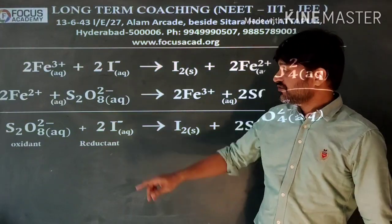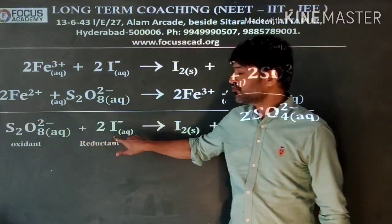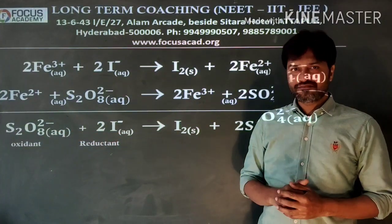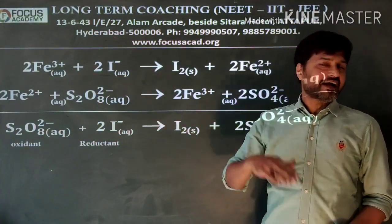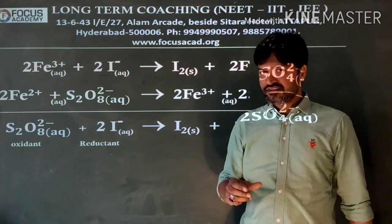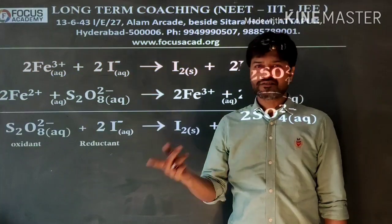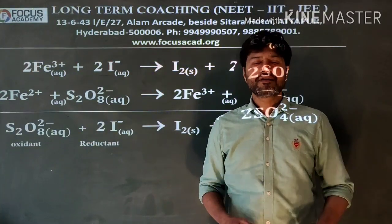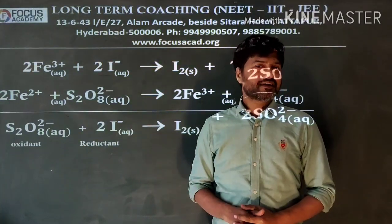If you don't use catalyst, these two having same charge tend to repel each other and the activation energy will go up and the reaction becomes slow. So a positive charge species which is capable of exhibiting two different oxidation states will be helpful here as a catalyst.